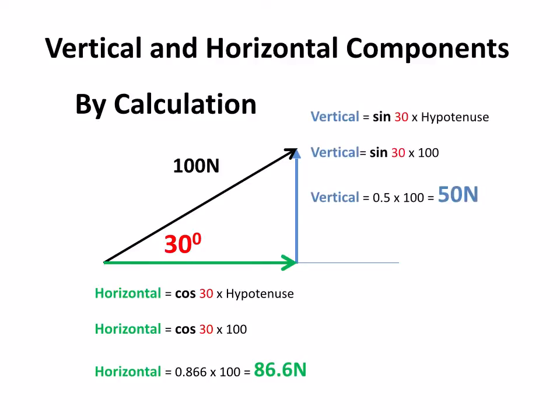My vertical component is the sine of that angle, so sine of 30 times the hypotenuse gives me 50 newtons.